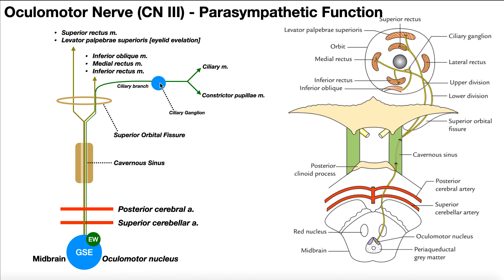The ciliary ganglion is not just involved with cranial nerve 3 — it's also involved with the trigeminal nerve, cranial nerve 5. What happens inside the ganglion is that the axons of the ciliary branch synapse with a new set of neurons. These neurons go directly either to the ciliary muscle or the constrictor pupillae muscle. These are two muscles associated with the eye that exist inside the eyeball.